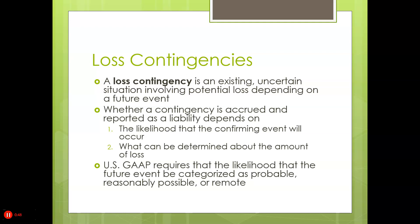The rule usually is: if it's probable, you have to accrue for it. If it's reasonably possible, you have to mention it in the footnotes. If it's remote, you ignore it.